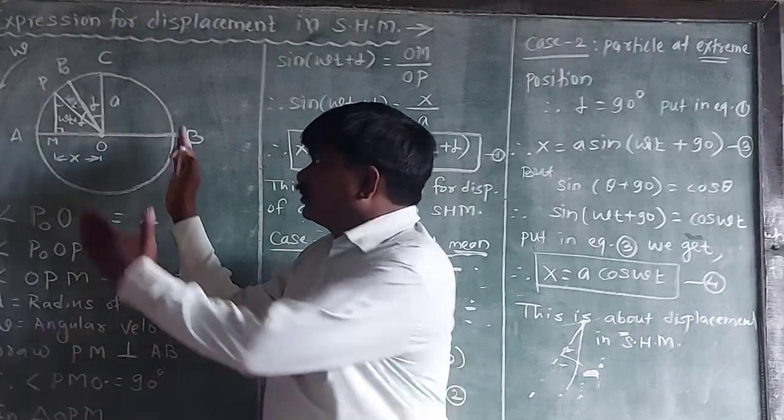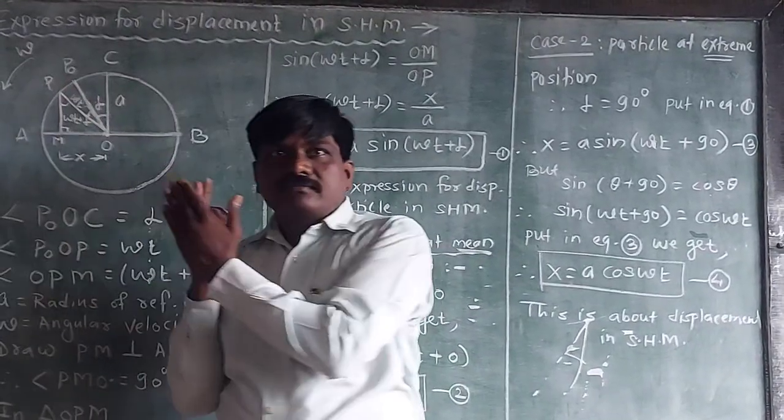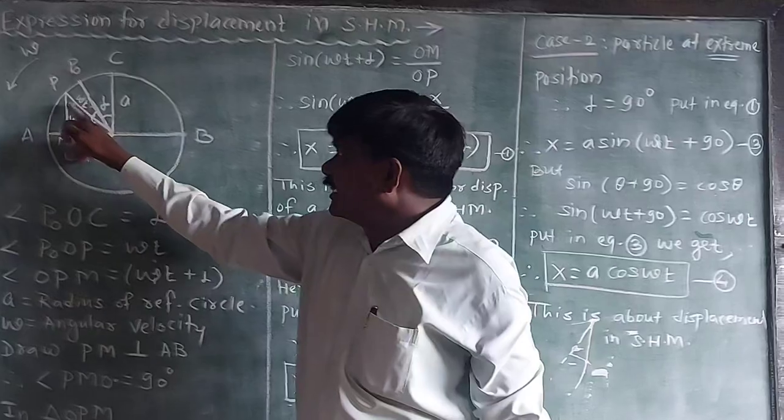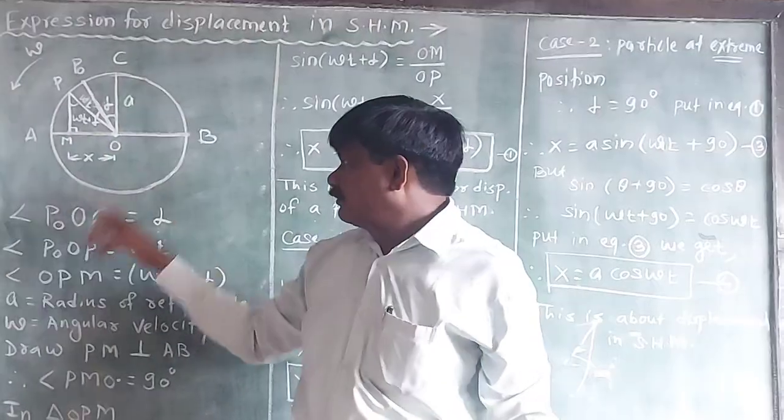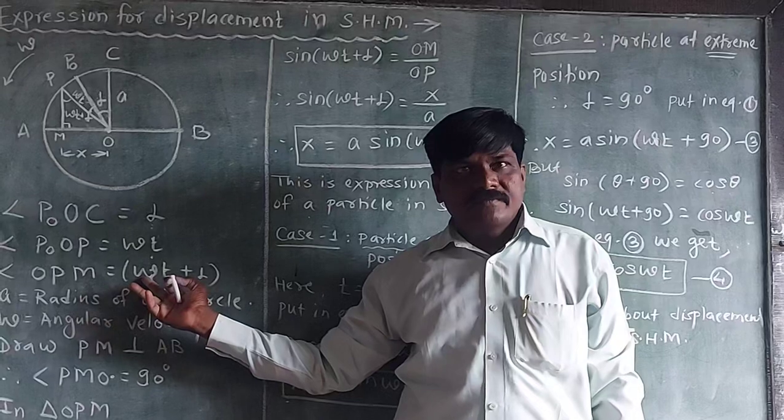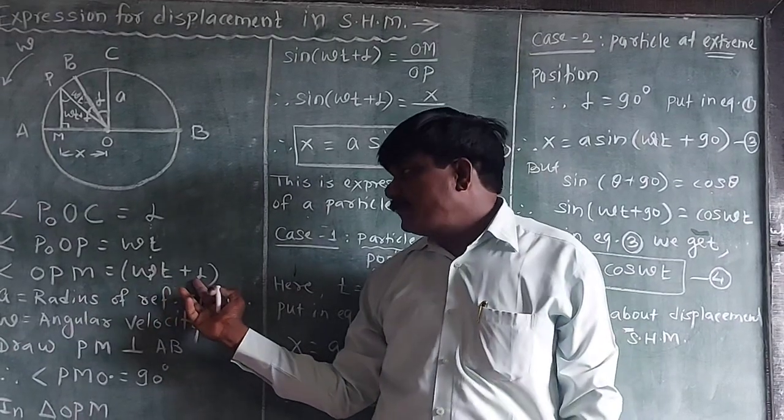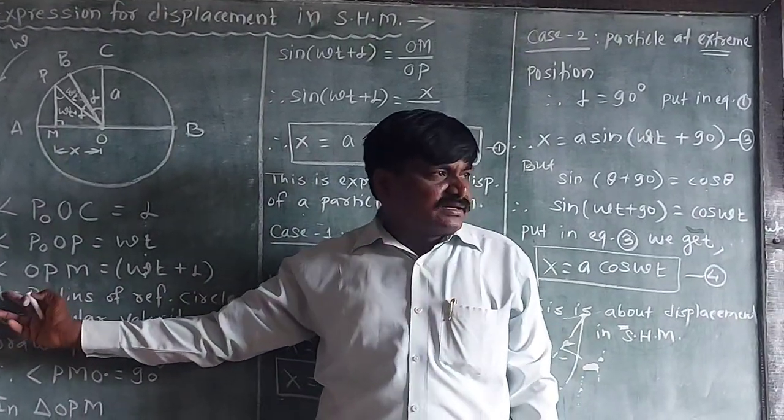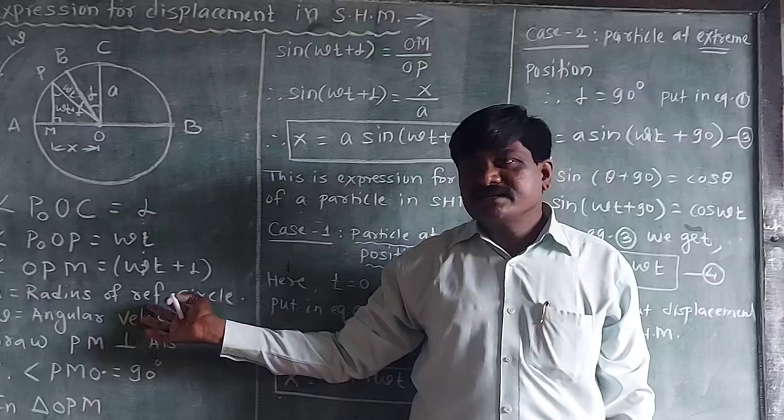Two lines are parallel. The alternating angles are congruent. Angle OPM equals omega T plus alpha, where A is the radius of the reference circle.